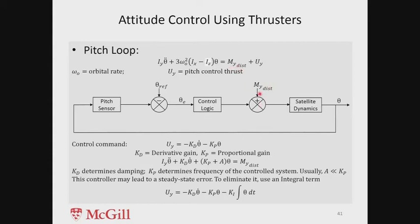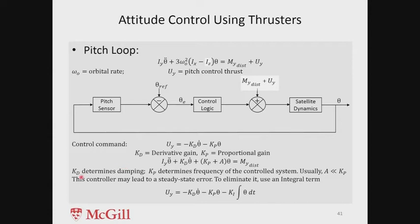Disturbances come from solar radiation torque or aerodynamic torque, as we saw earlier. Gravity gradient torque is not a disturbance put into satellite dynamics because it is already included in the equation of motion — this term is basically the gravity gradient torque. So the disturbance here refers to aerodynamic, solar radiation, or magnetic torques. In the loop, the total input is M_y_disturbance plus the control input u_i.